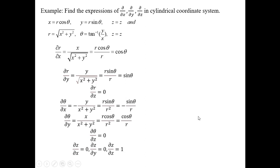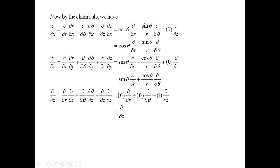Now we replace all computed values into the chain rule expressions for the differential operators. For ∂/∂x, substituting the values gives: ∂/∂x = cos θ (∂/∂r) − (sin θ / r)(∂/∂θ).